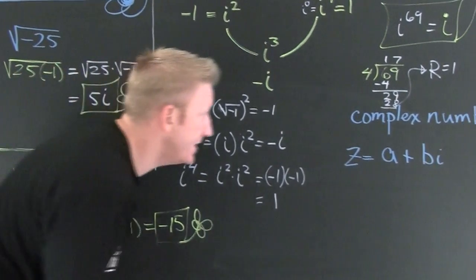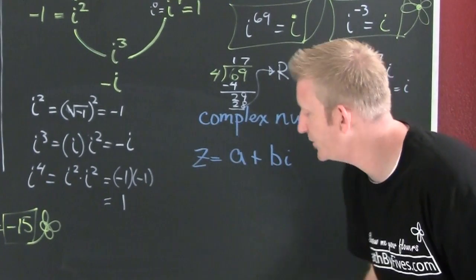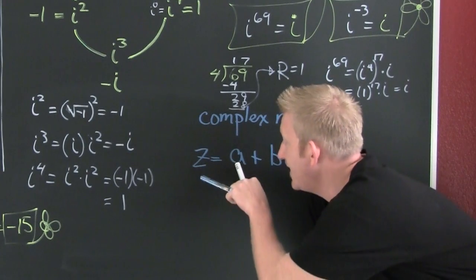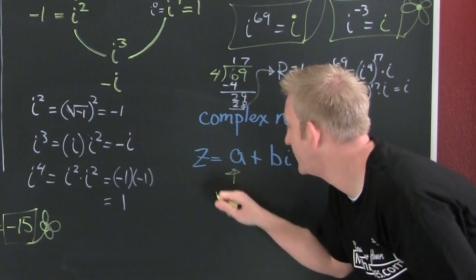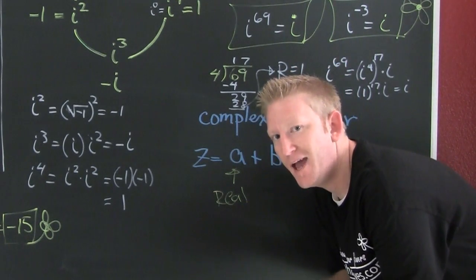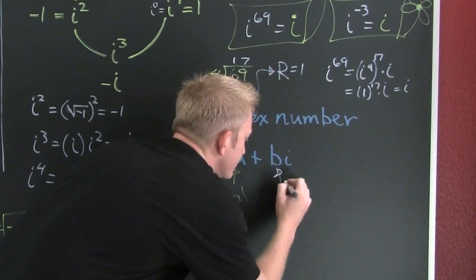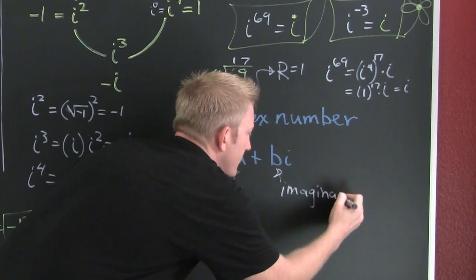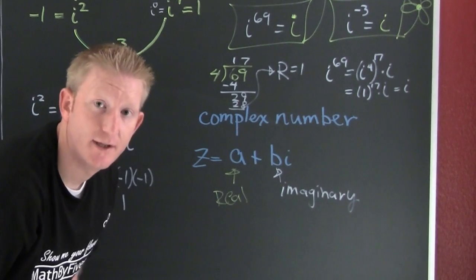Which brings me to this idea of a complex number. A complex number is going to have a real part and an imaginary part. a is the real part, and b is the imaginary part. A complex number can be written in this form: z = a + bi.